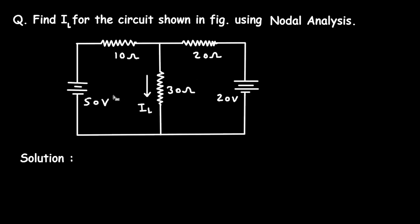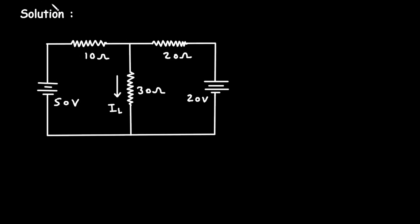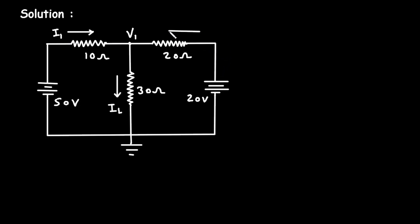First of all, we will take this circuit. Let's assume this is a reference node or ground node. We have to take all the currents towards this reference node. Let's say this is node V1. This IL is already towards this reference node. Let's say this is current I1, and let's say this is current I2.